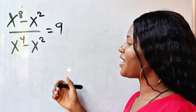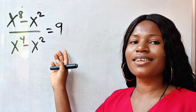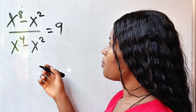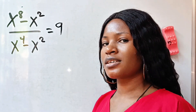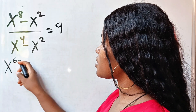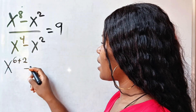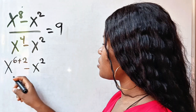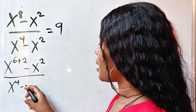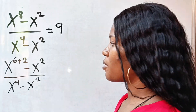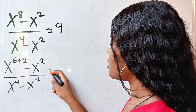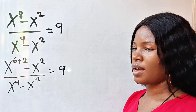Welcome back to my channel. Let's find the value of x in this tricky math question. First of all, let's represent 8 as 6 plus 2. So we have x to the power of 6 plus 2, minus x to the power of 2, divided by x to the power of 4 minus x to the power of 2. This is equal to 9.